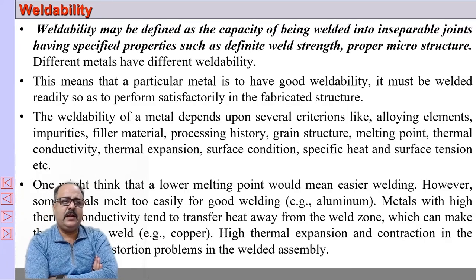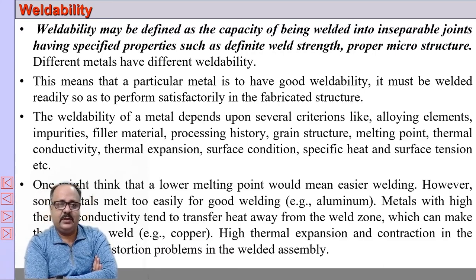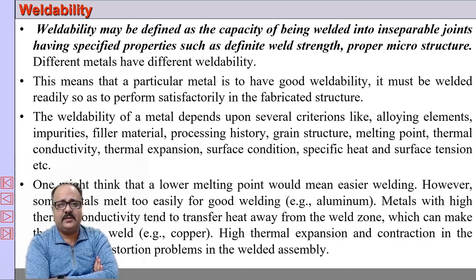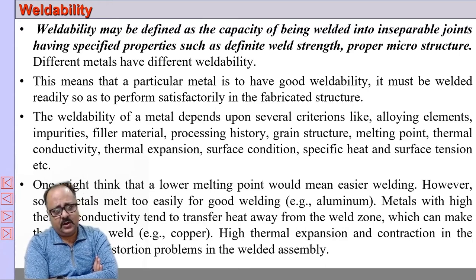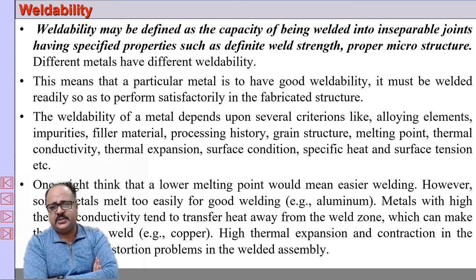Another very important term is weldability. As the name suggests, it is the capacity of a particular material to be welded into inseparable joints, and the quality of the weld should be good — meaning the weld should have the specified properties, the required strength, and the proper microstructure. Different metals have different weldability; some can be easily welded, some are difficult. Weldability depends on alloying elements, impurities, thermal conductivity, thermal expansion, surface conditions, specific heat, surface tension, filler material, processing history, grain structure, and melting temperature.